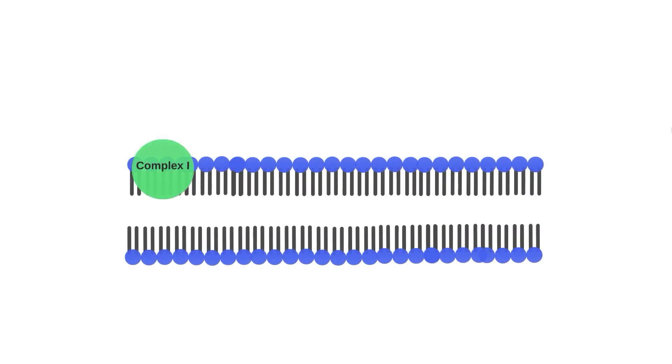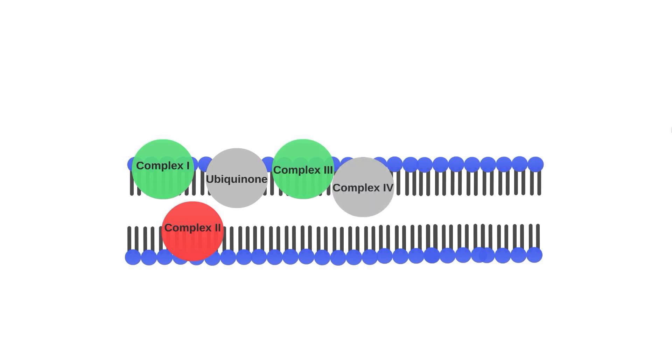In our last video we highlighted the fact that the cytochromes of the electron transport chain shuttle protons into the intermembrane space and that the proton gradient produced would be our fuel for ATP production. The main engine that runs oxidative phosphorylation is complex V, otherwise known as ATP synthase.